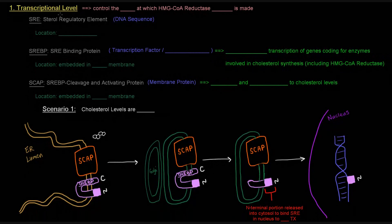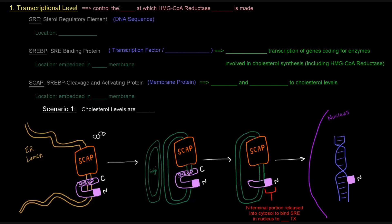At the transcriptional level, the idea is to control the rate at which the HMG-CoA reductase mRNA is made. Before we can actually discuss the mechanism by which that happens, we have to get past some terminology first.